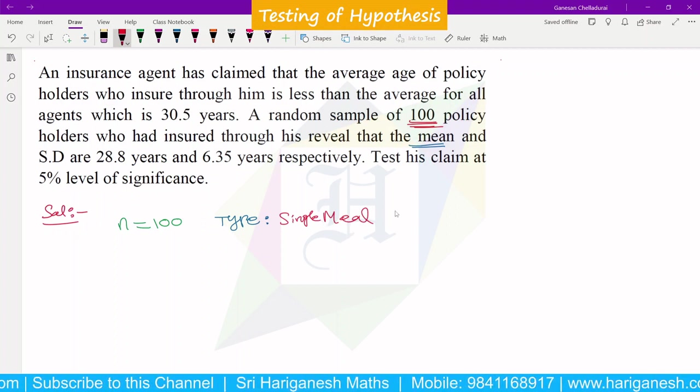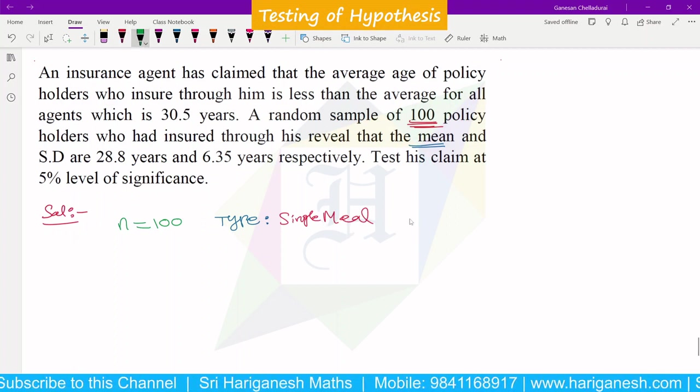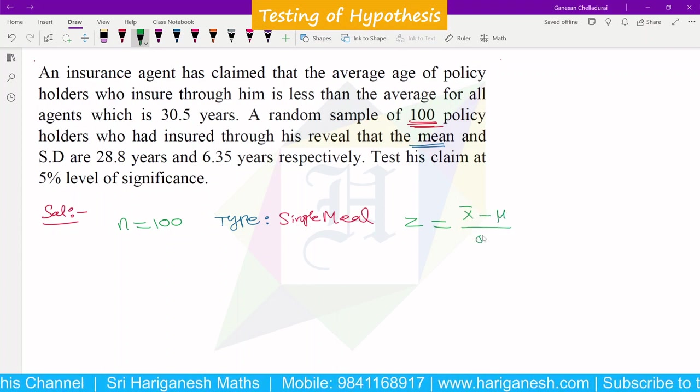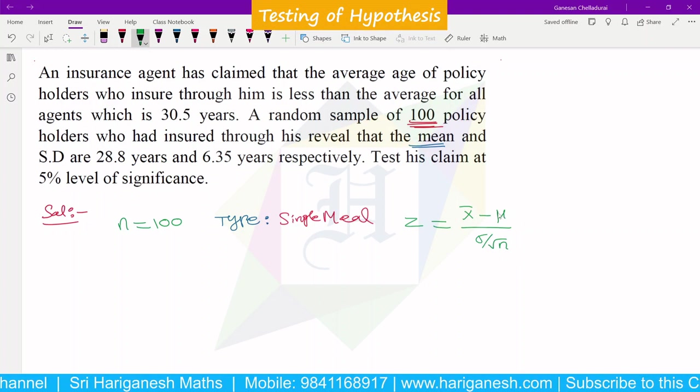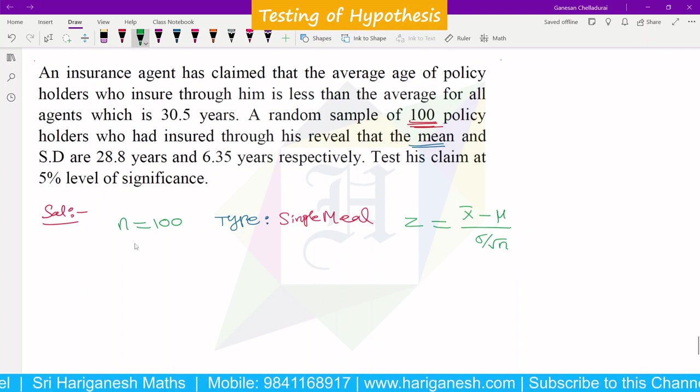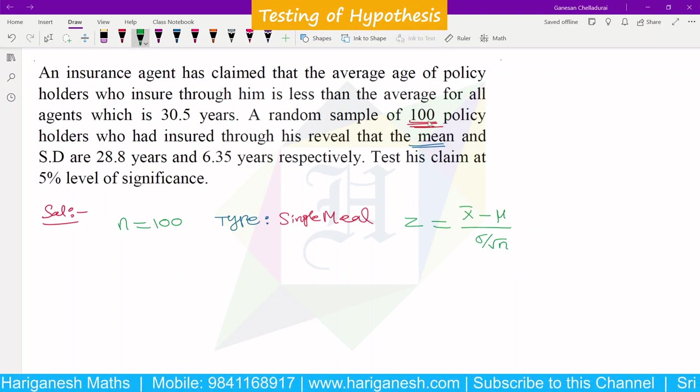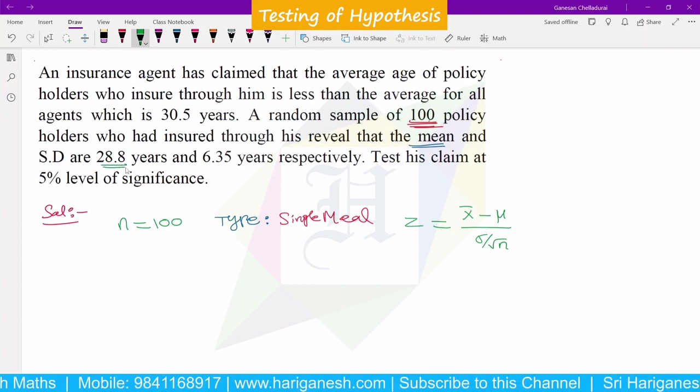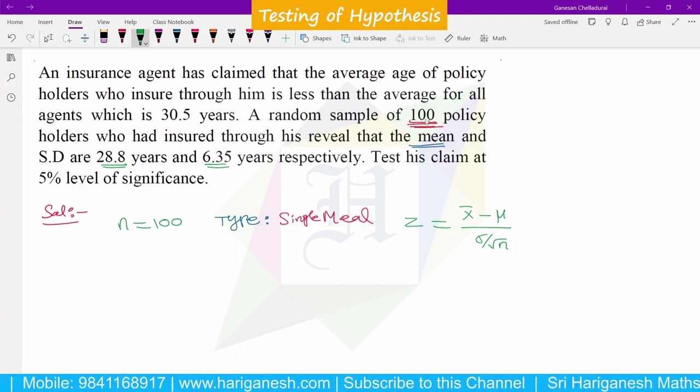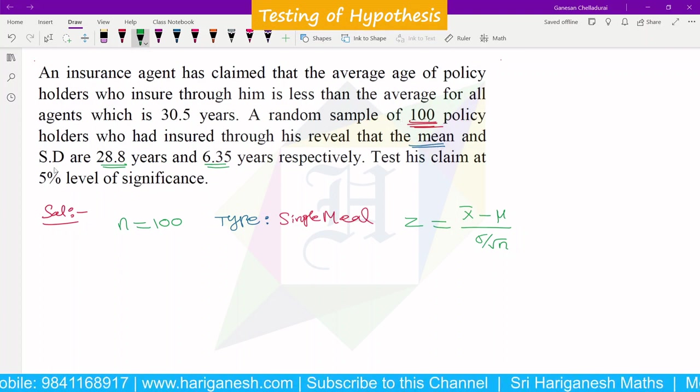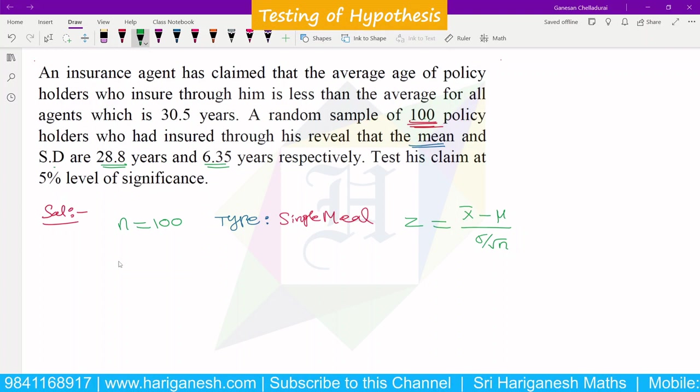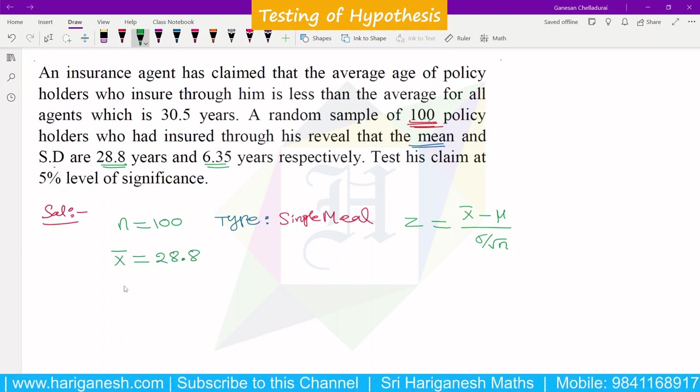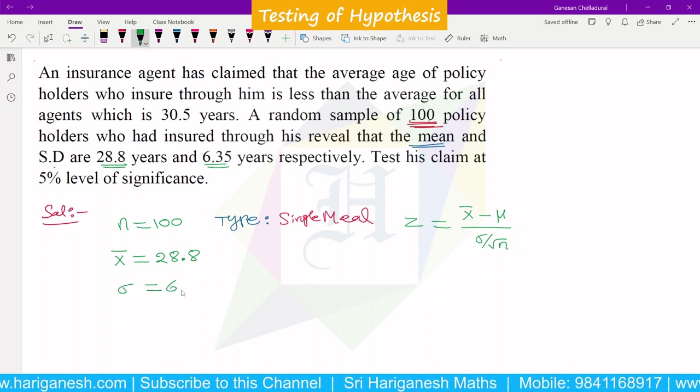So this is the single mean type, that is the z-formula: x bar minus mu divided by sigma over root n.